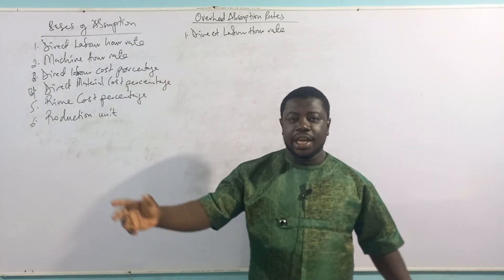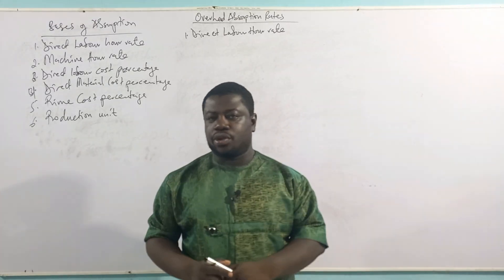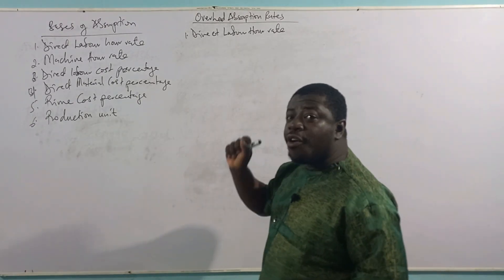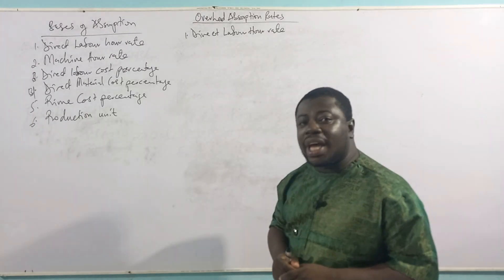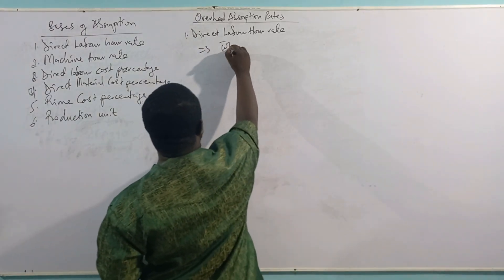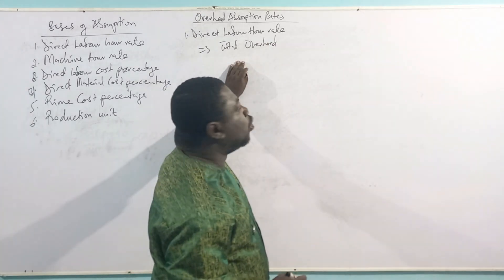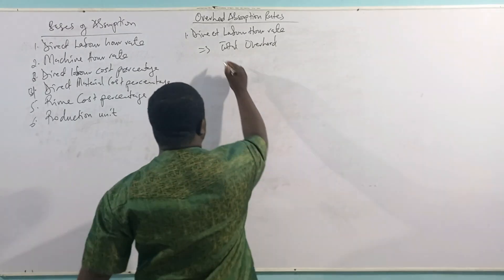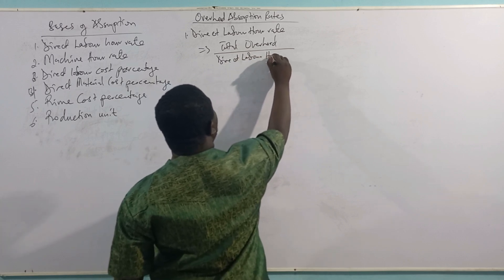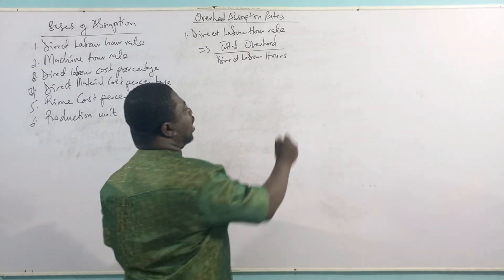For the direct labor hour rate, this is where you divide the total overhead by the total direct labor hours. We are looking at how to absorb the overheads per unit. There will always be a total overhead incurred — that total overhead cost that you have incurred, you want to absorb it per unit and get it into the product cost. The total overhead cost is divided by the total direct labor hours to determine the rate per labor hour.